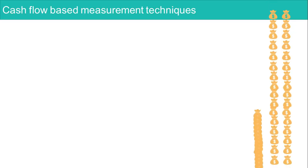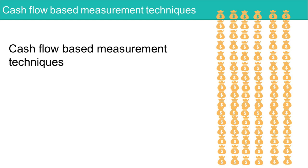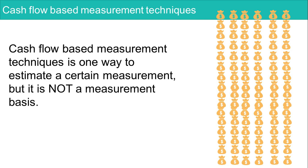Chapter 6 concludes by talking about cash flow based measurement techniques. Cash flow based measurement techniques are one way to estimate a certain measurement, but they are not a measurement basis. Our measurement bases are really just historical cost and current value, which includes fair value, value in use or fulfillment value, and current cost. In other words, cash flow measurement techniques can be used in any of the three current value measurements.